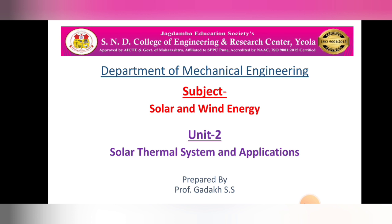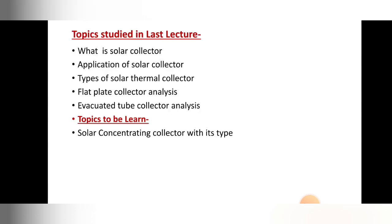So let's see which topics we have learned from Unit Number Two. We covered what is the solar collector, applications of solar collectors, and types of solar thermal collectors. Specifically, we have seen non-concentrating types — flat plate collectors and evacuated tube collectors — including their analysis in detail in the last lecture.